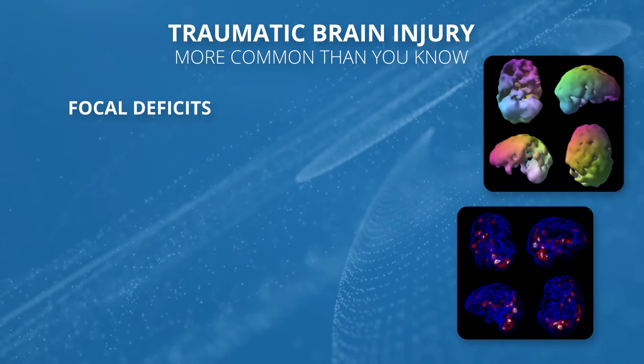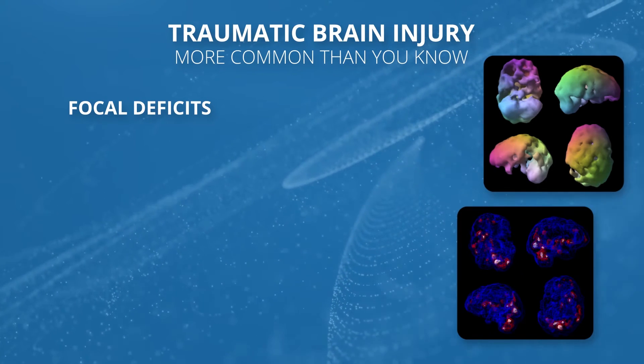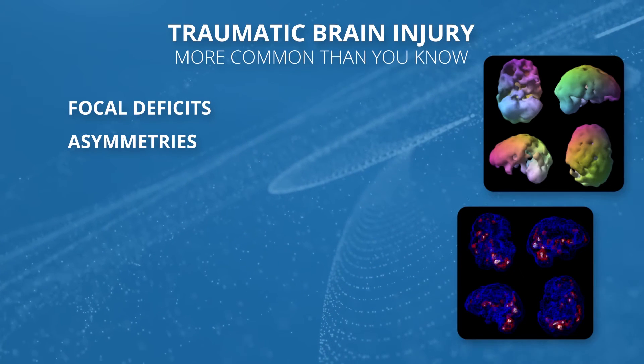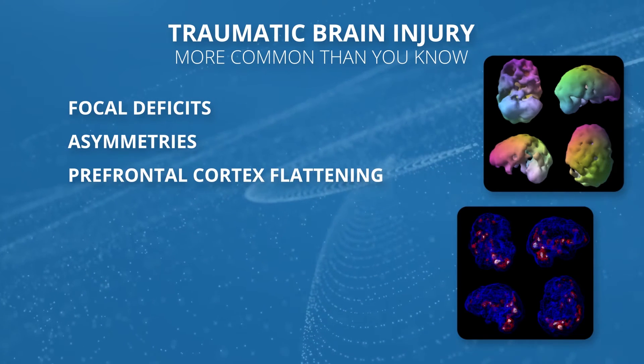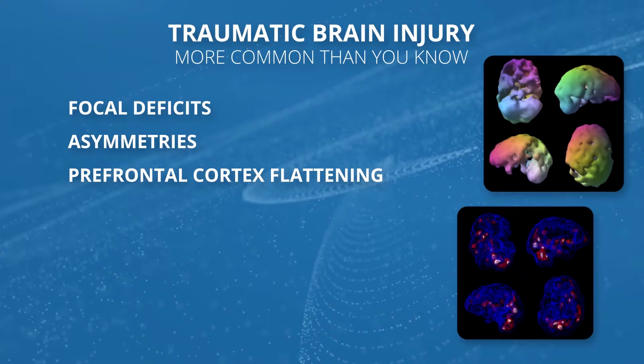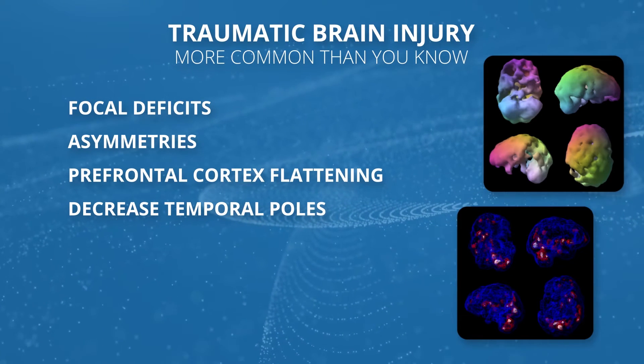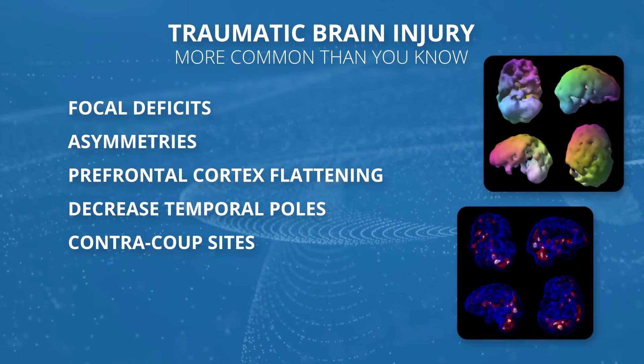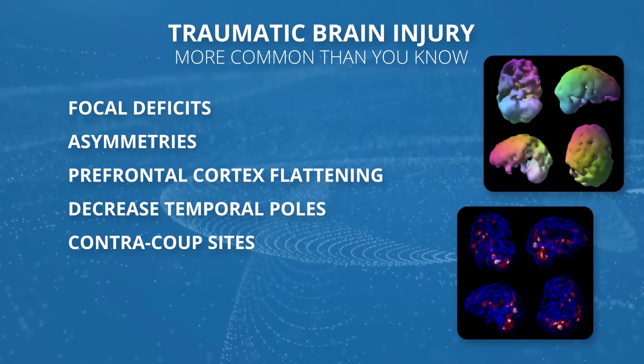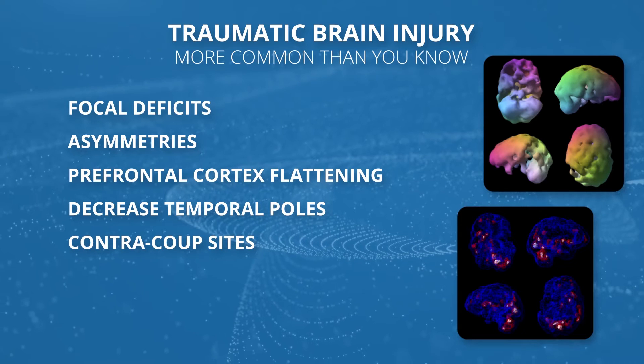Traumatic brain injury — as I've discussed before — shows a number of different patterns on SPECT. Sometimes we'll see a focal deficit on one side or the other. Often we'll see asymmetries. We'll see the prefrontal cortex is flat, because it hits the front part of the skull over and over again. That's what we saw in our NFL players. You'll see decreases in the temporal poles because they butt up against a sharp bony ridge. We'll also see contrecoup injuries — damage in the front and on the opposite side in the back.